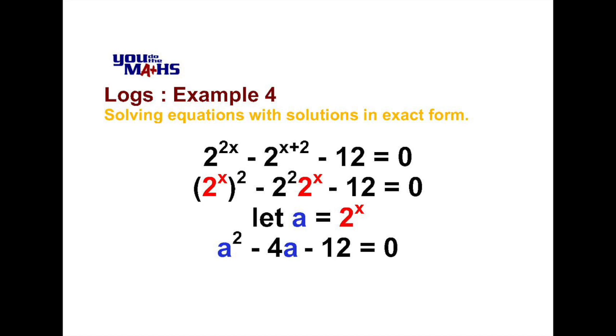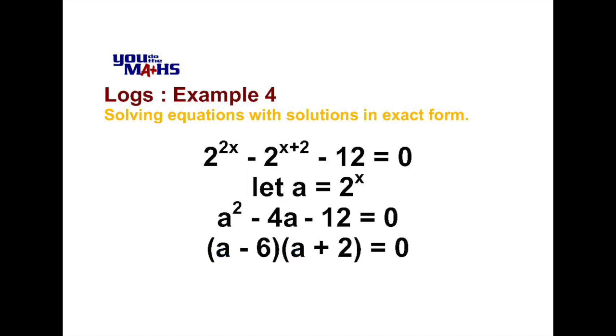To solve this we're looking for two numbers that multiply to negative 12 and add up to negative 4. And if we do that we find that the numbers are negative 6 and positive 2. We place those in the bracket so we have a minus 6 in one bracket and a plus 2 in the other bracket.